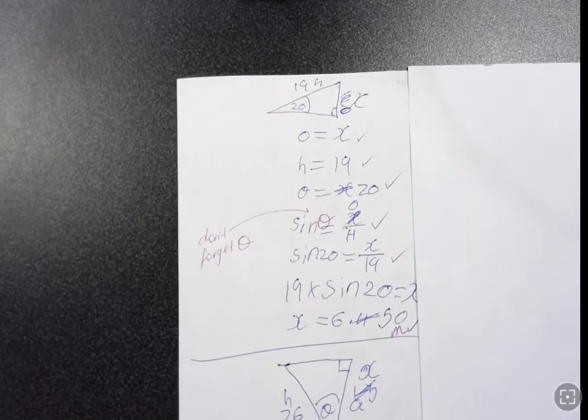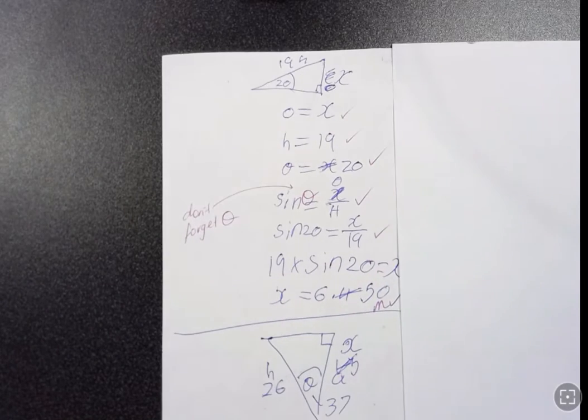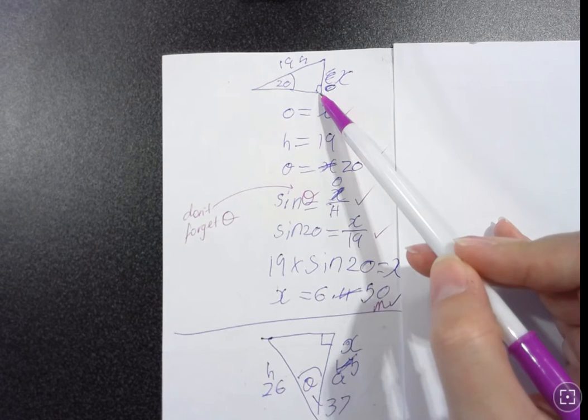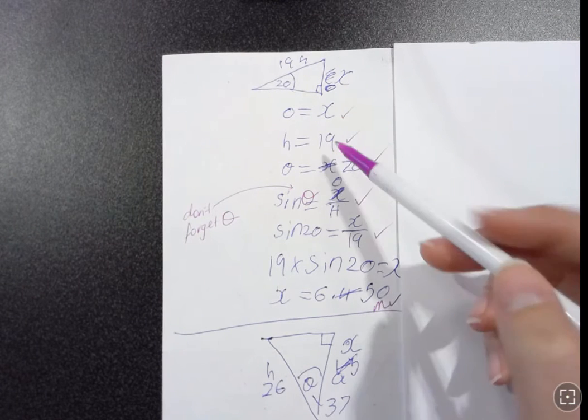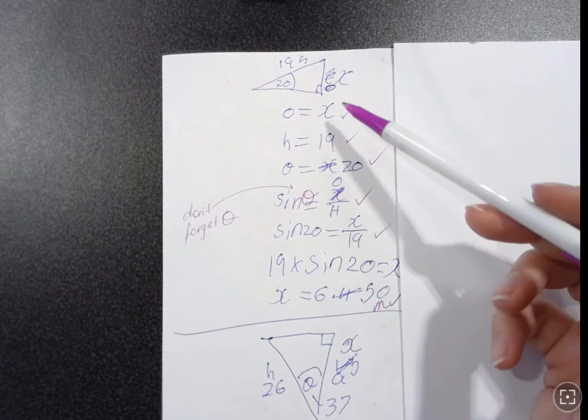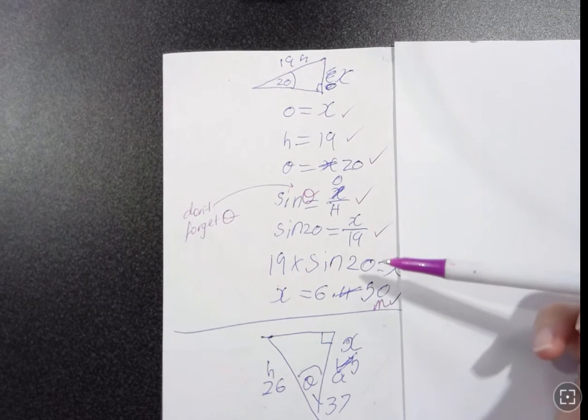All right, flipping it over, let's have a look. We found our sides in our trigonometry, well done. Again, you've labelled your sides correctly, you've chosen your correct rule, it's not a problem.